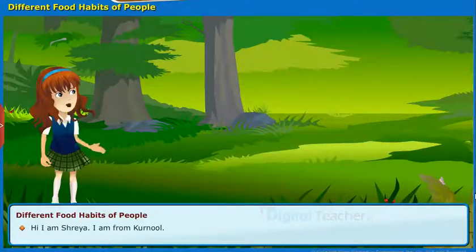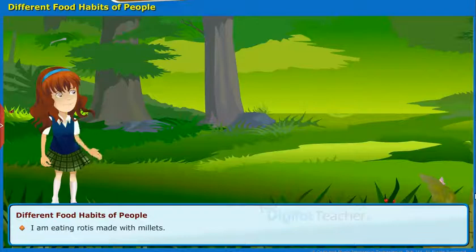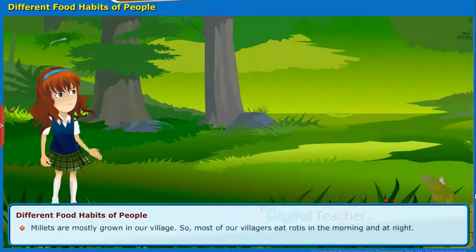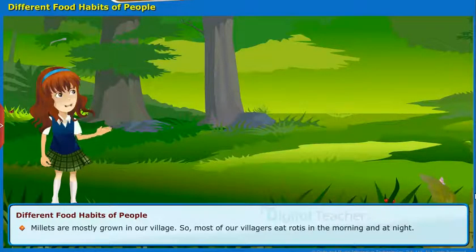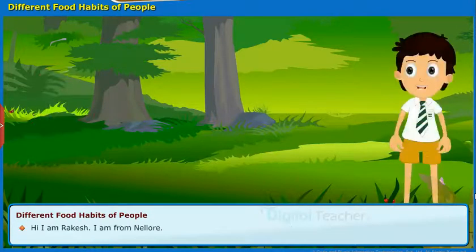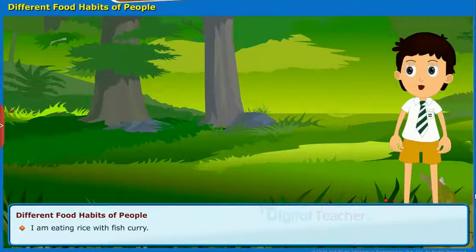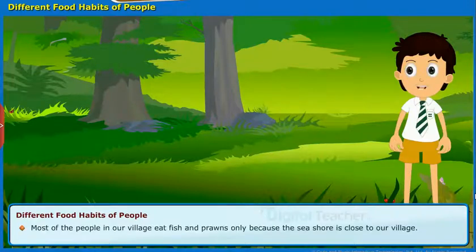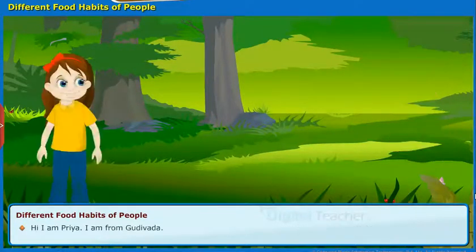Hi, I am Freya. I am from Kurnool. I am eating rotis made with millets. Millets are mostly grown in our village, so most of our villagers eat rotis in the morning and at night. Hi, I am Rakesh. I am from Nellore. I am eating rice with fish curry. Most of the people in our village eat fish and prawns, only because the seashore is close to our village.